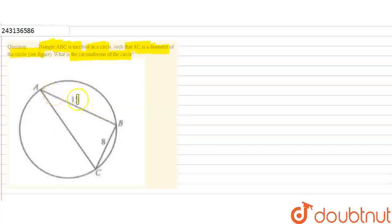As you can see, this is triangle ABC. AB is 15, BC is 8. We need to find the circumference of the circle, and it is given that AC is the diameter.